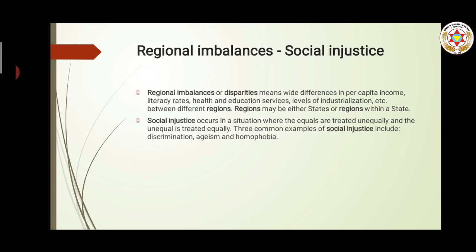Coming to regional imbalances — regional imbalances are basically disparities or wide gaps or differences in per capita income, literacy rate, health, or education. There can be any sector or field in which there is a gap, and that gap creates imbalances. Coming to social injustice, it is basically a situation in which equals are treated unequally and unequals are treated equally.